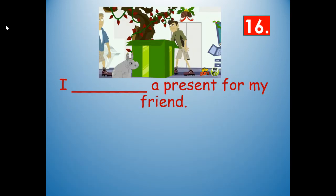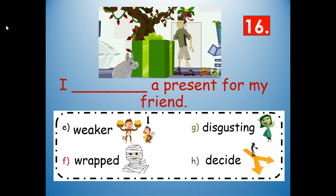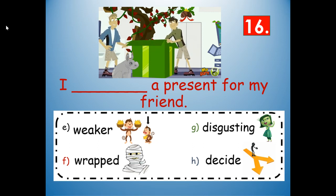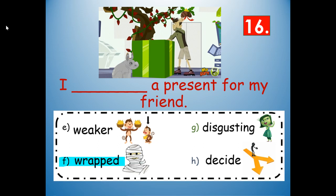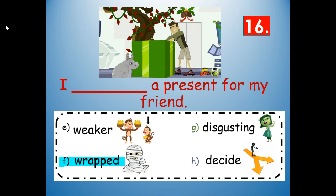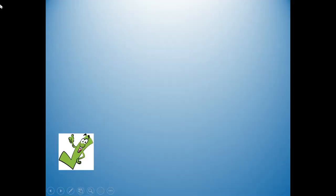Number 16, our last one: I blank a present for my friend. Would it be weaker, wrapped, disgusting, or decide? What makes sense given where the word is in the sentence and our picture clue? Wrapped — W-R-A-P-P-E-D. The root word is wrap. I wrapped a present for my friend.